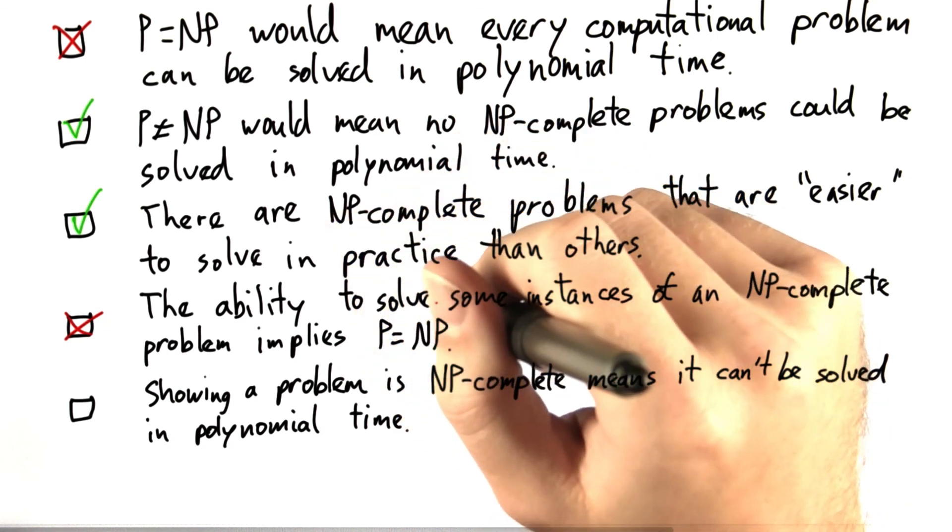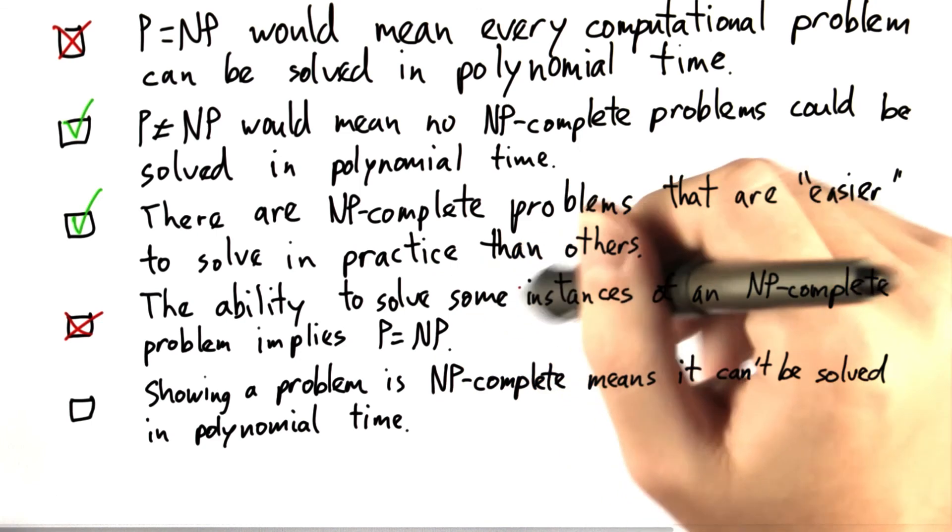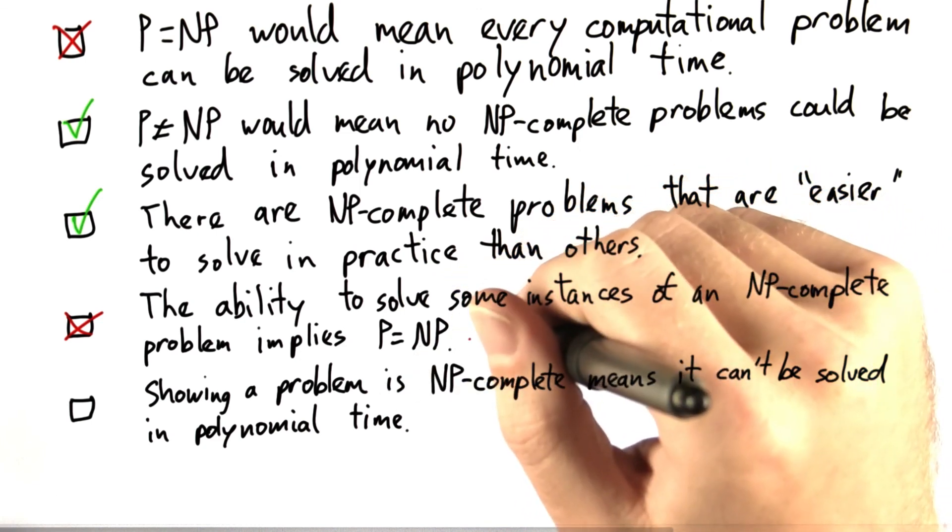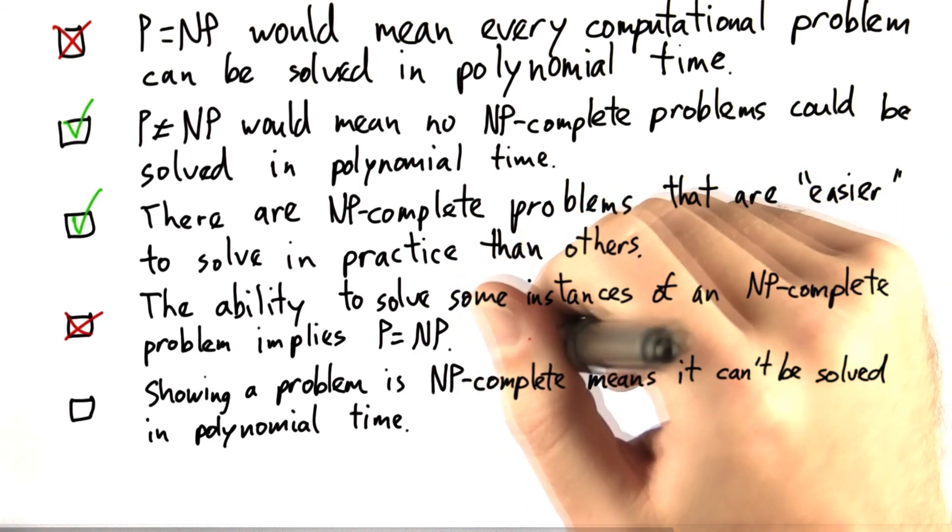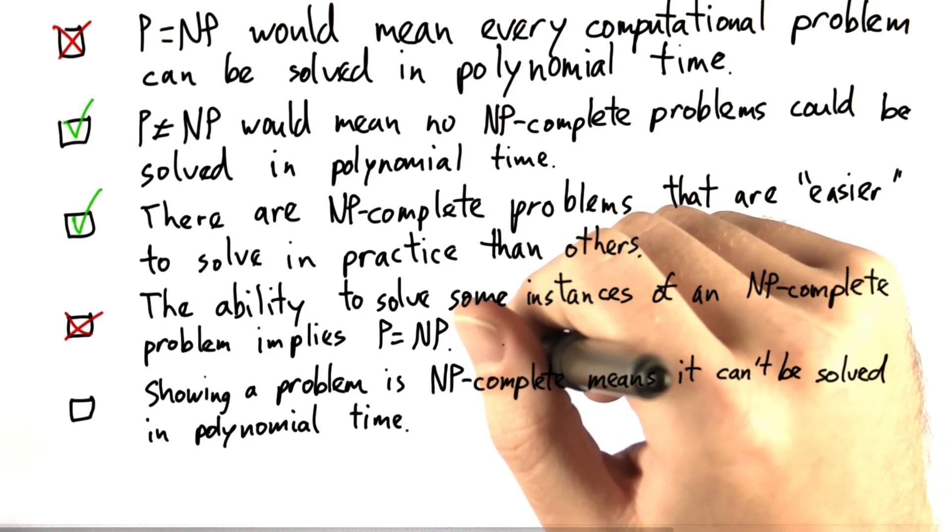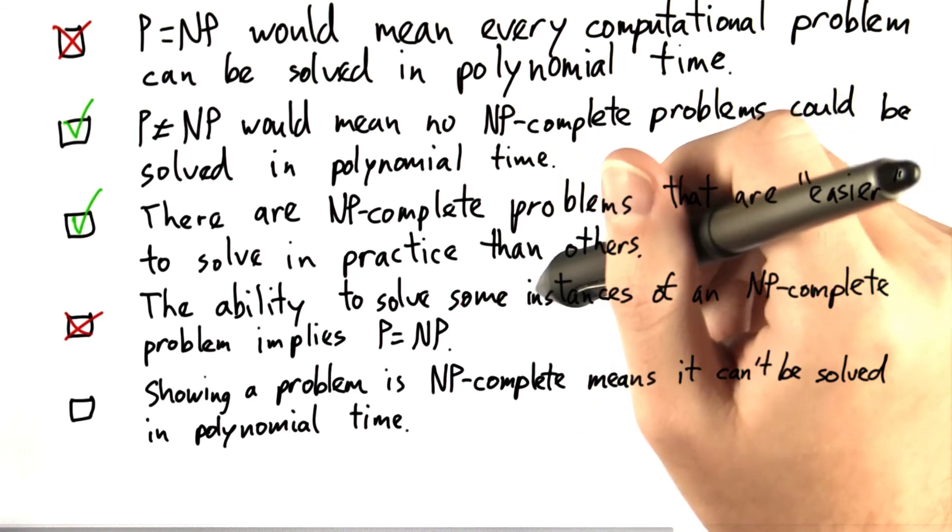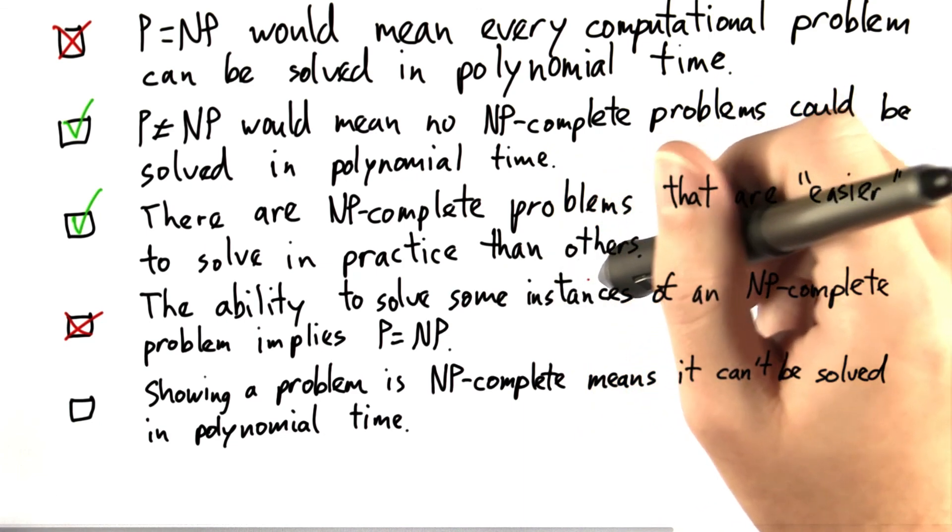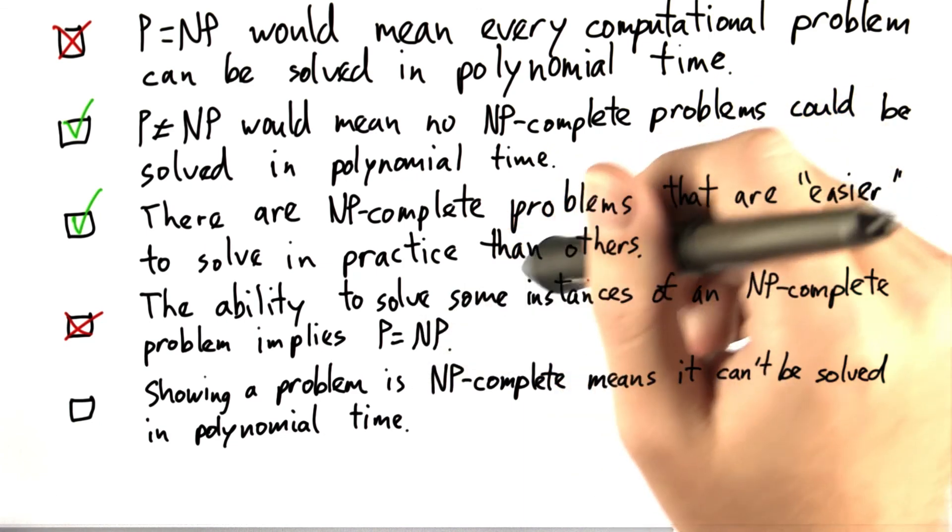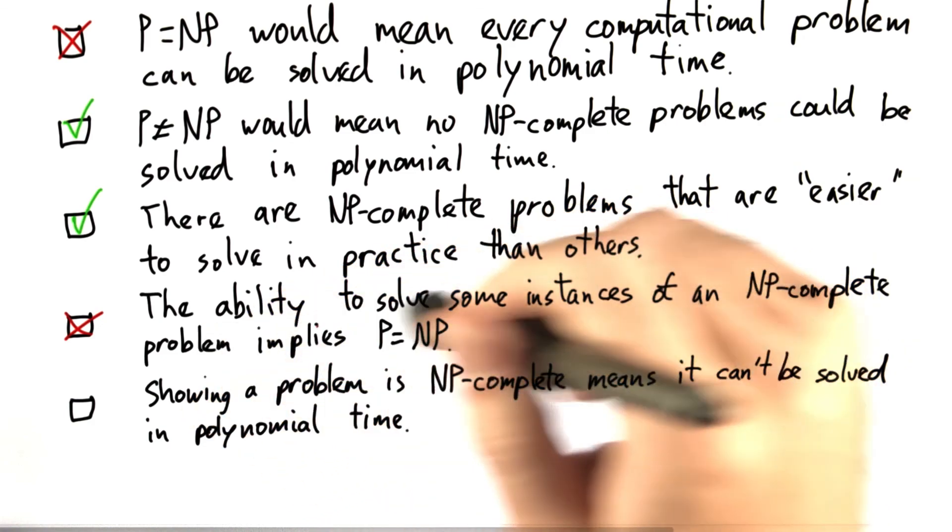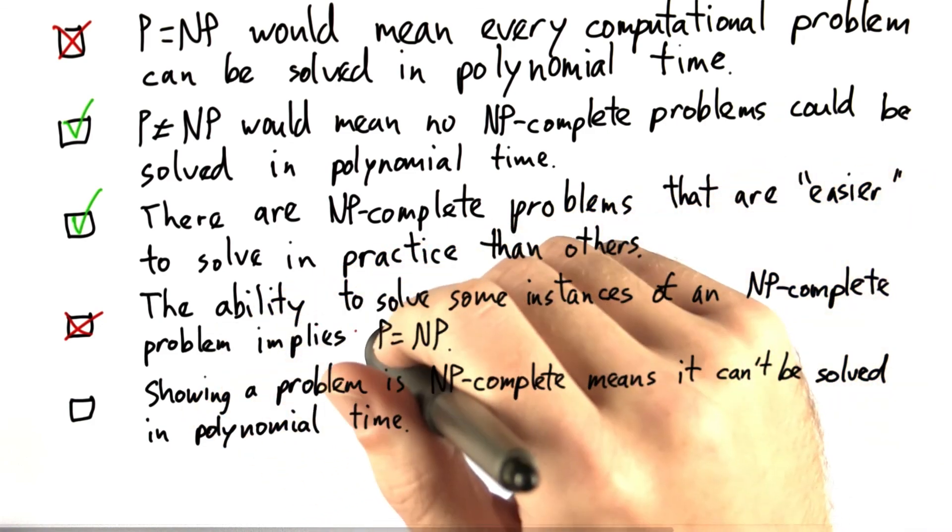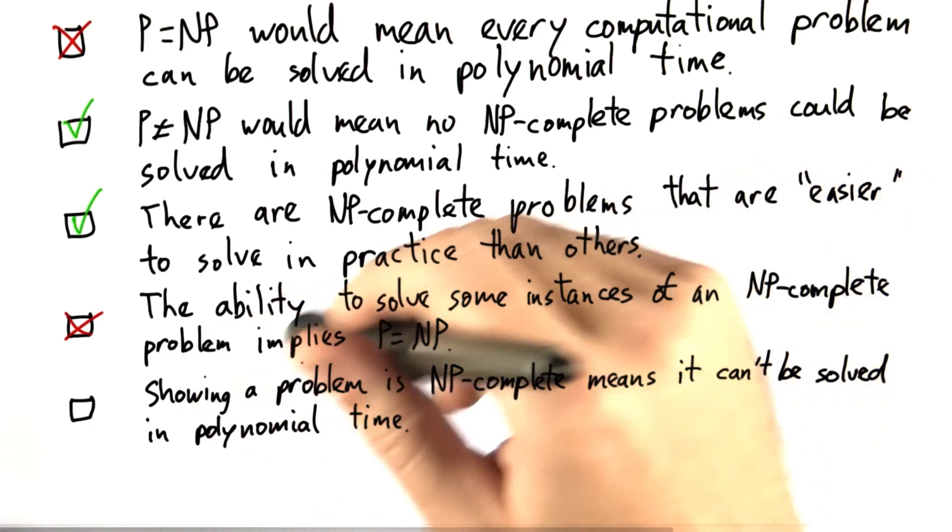For example, you can find the clique or a minimum vertex cover of an empty graph relatively easily. It's, well, nothing because the empty graph has no vertices and no edges. That's an example of an instance that you can quite possibly always solve or you should always be able to solve very quickly. But that doesn't mean that you can solve all instances.